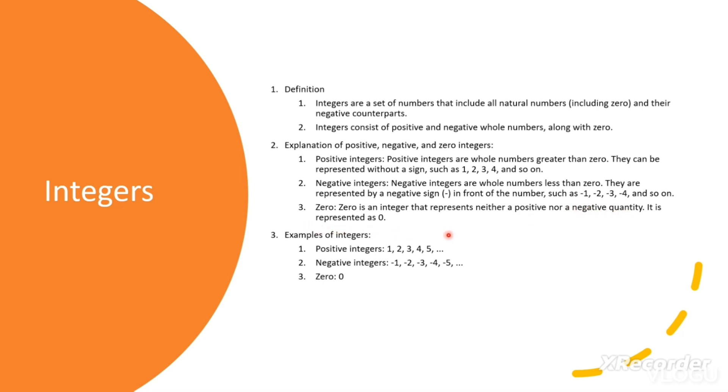Zero: Zero is an integer that represents neither a positive nor a negative quantity. It is represented as 0.